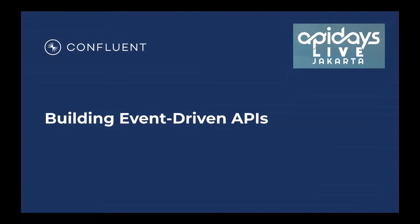We're going to discuss the topic of building event-driven APIs, and we'll see how there could be different strategies for building real-time APIs — APIs for getting real-time data into your applications. We'll see how that is different from the traditional approach where we're using request and reply patterns. We'll go through a specific example — customer 360 — to understand how this all relates to bringing data from different sources, stitching it together, and exposing it through APIs.